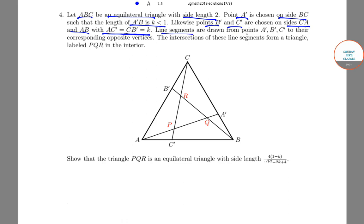Line segments are drawn from points A', B', C' to their corresponding opposite vertices. The intersections of these line segments form a triangle labeled PQR in the interior.